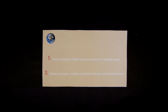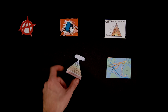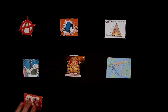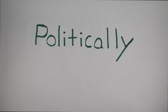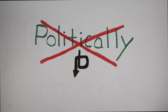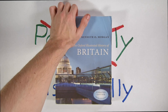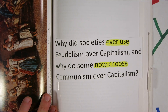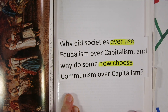Sometimes it helps to chart it on a timeline: anarchy, bartering, feudalism, mercantilism, dharma or whatever India had, capitalism, communism, socialism. And instead of looking at it politically — like why is Chinese communism bad — but instead historically, we get questions like: why did some societies use feudalism over capitalism, and why do others now choose communism over capitalism? These are interesting questions.